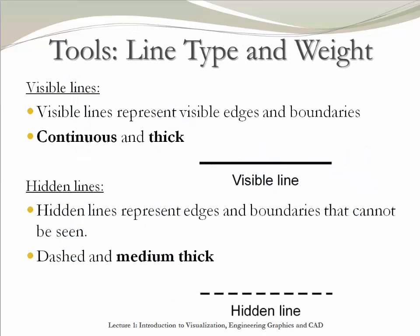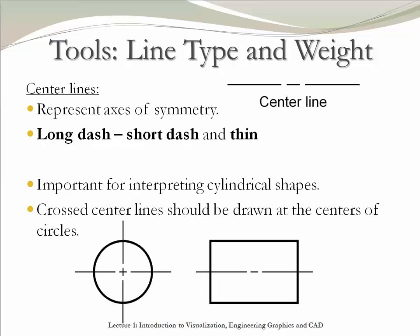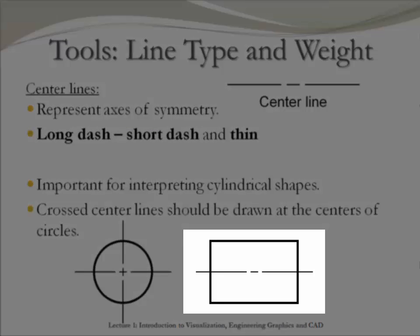It is important to understand the types of lines used in an engineering drawing. Visible lines represent visible edges or boundaries — they are continuous and thick. Hidden lines represent edges that are not visible — they are dashed and medium thick. Center lines represent the axis of symmetry of an object; they are a combination of a long dash, short dash, and a long dash. It is very important to use center lines to represent cylindrical shapes. For example, looking at an object from a certain view, a user cannot tell whether it's a box or a cylinder — the only way is to add a center line to show that it is indeed a cylinder.